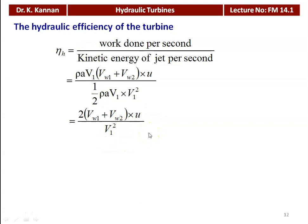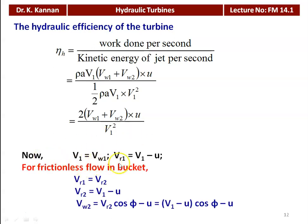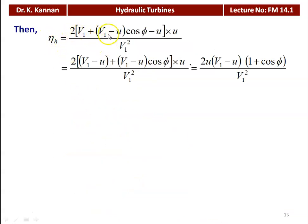Taking V1 = Vw1, Vr1 = V1 − U, and for frictionless flow Vr1 = Vr2 = V1 − U, then Vw2 = (V1 − U)cosφ − U. Substituting into the hydraulic efficiency equation: η_h = 2U(V1 − U)(1 + cosφ) / V1².